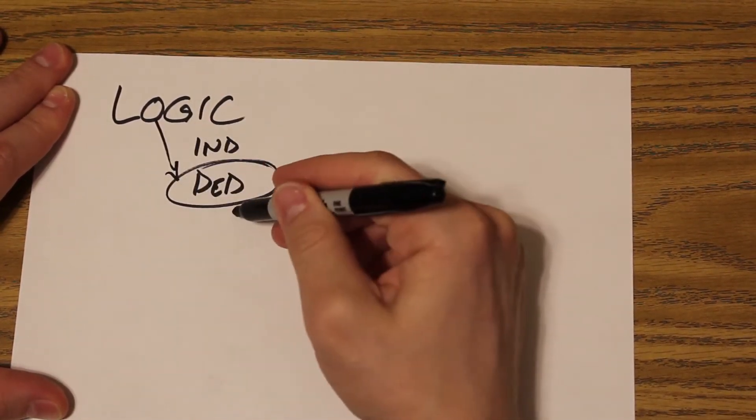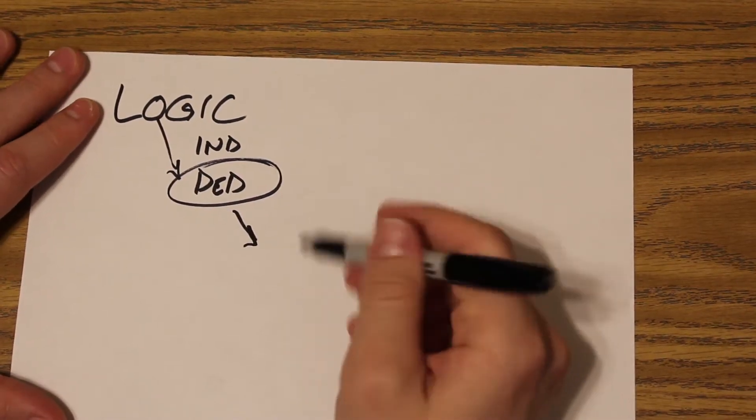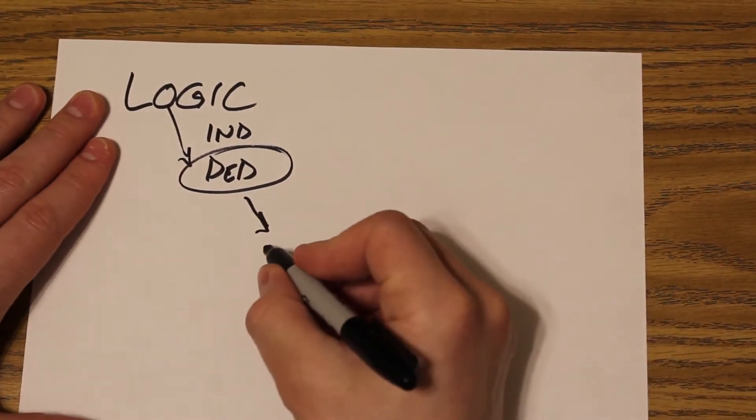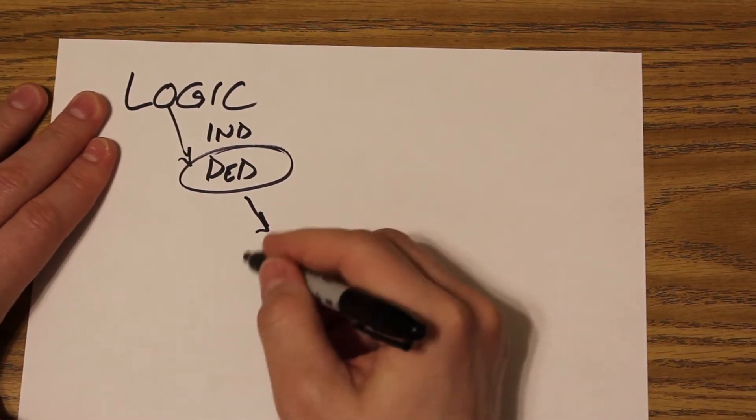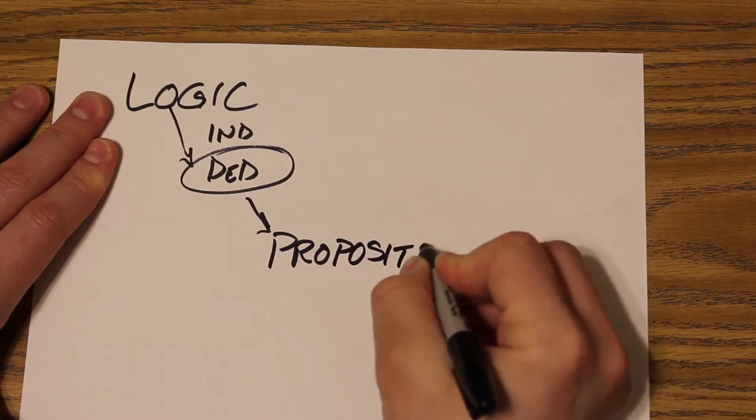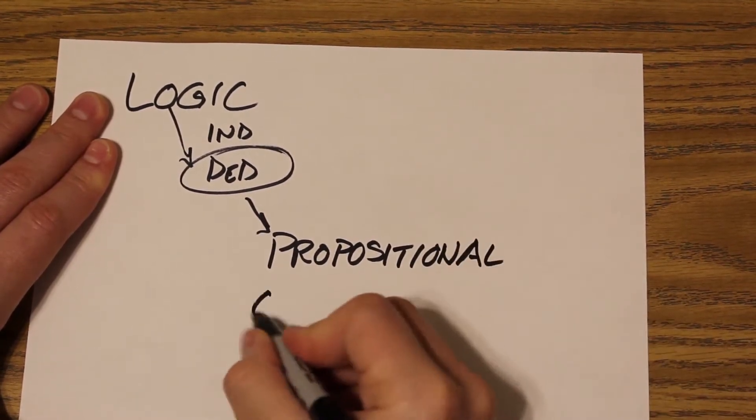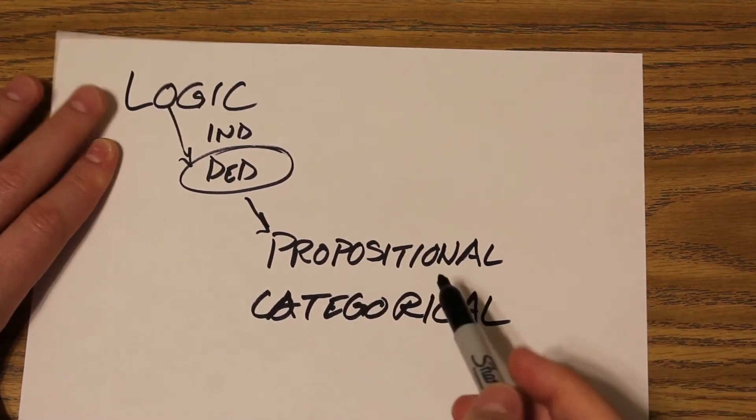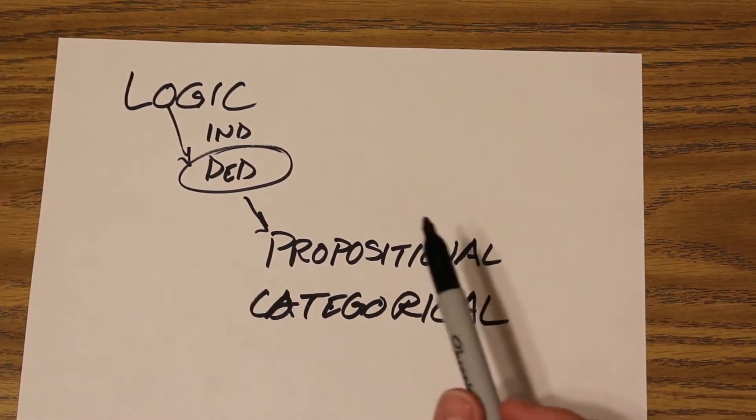So logic, subsection, deduction. And then another subsection of deduction is going to be propositional versus categorical. So propositional and categorical. These are two subsections of deductive logic.